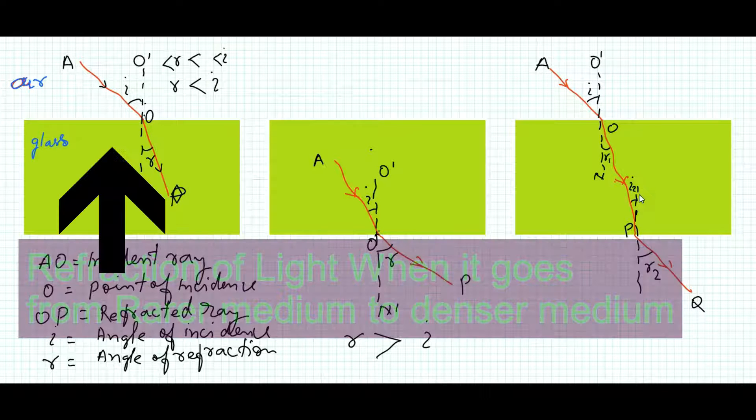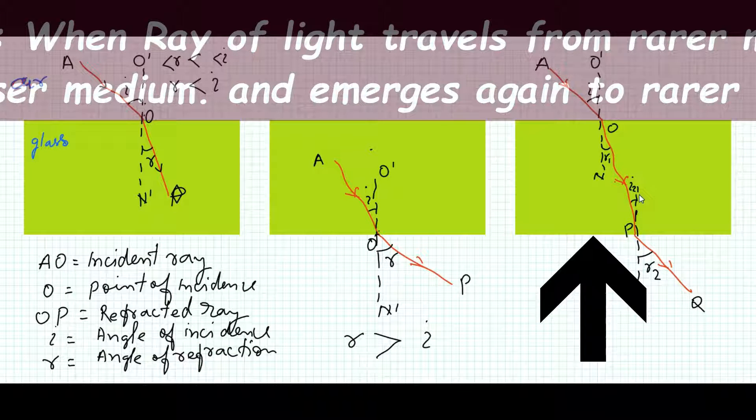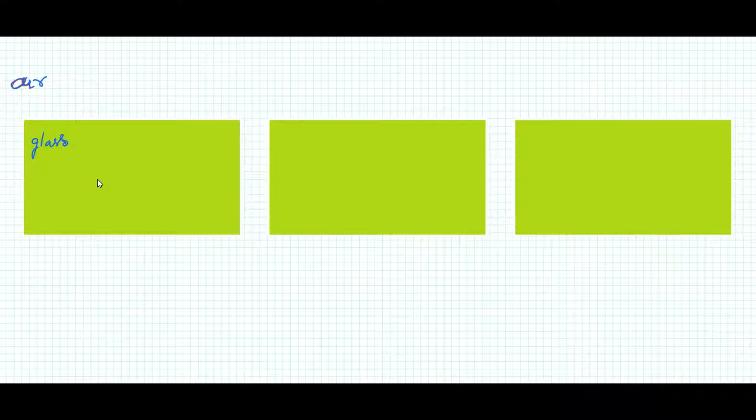Here I am going to show you the three cases of refraction of light when the ray of light travels from a rare medium to a denser medium. Here this is the air and this is glass, which is a denser medium. Instead of glass, we can also show water — when we show water we will illustrate with points or drops and will not show the solid structure.